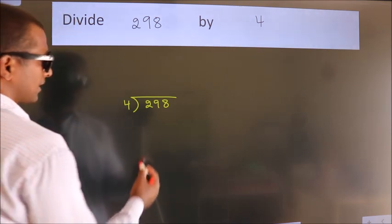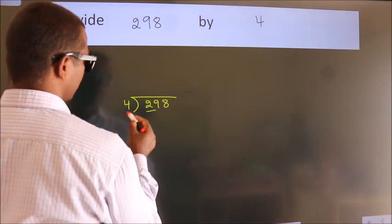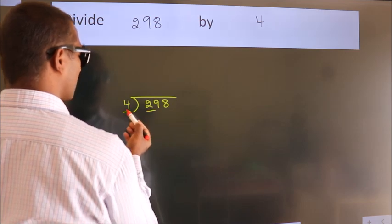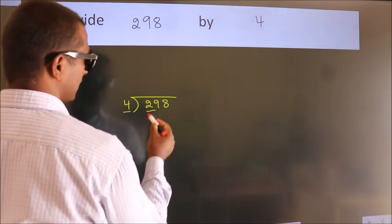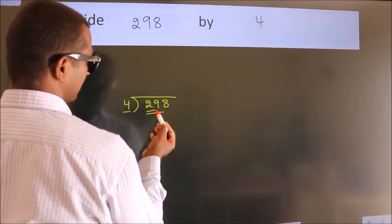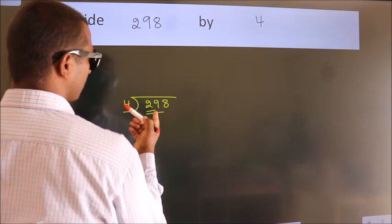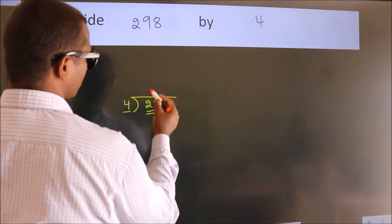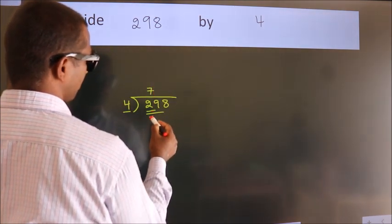Next, here we have 2. Here 4. 2 is smaller than 4, so we should take 2 numbers: 29. A number close to 29 in the 4 table is 4 times 7 equals 28.